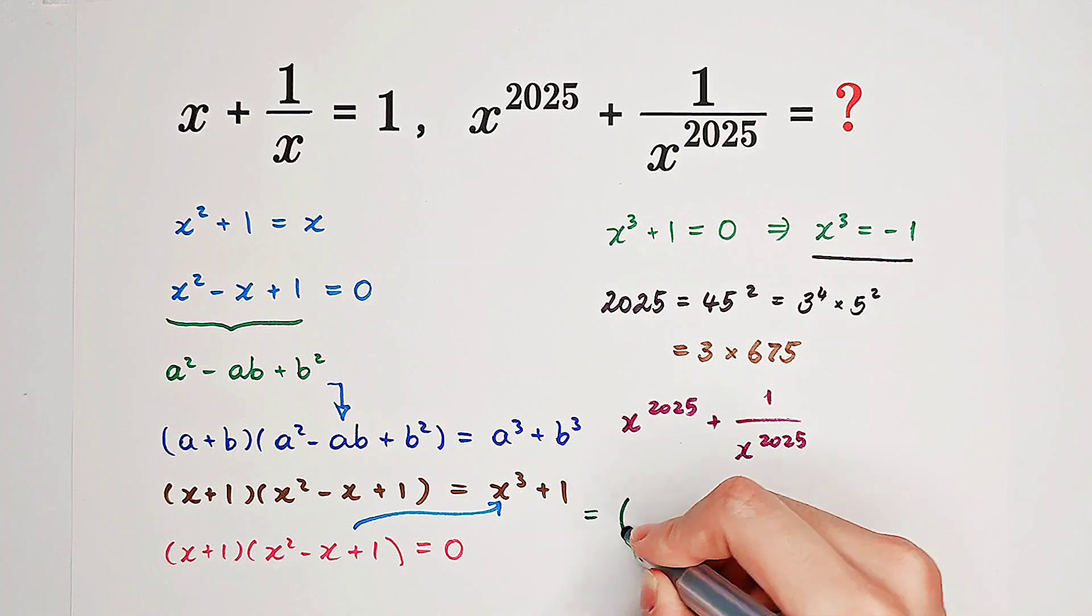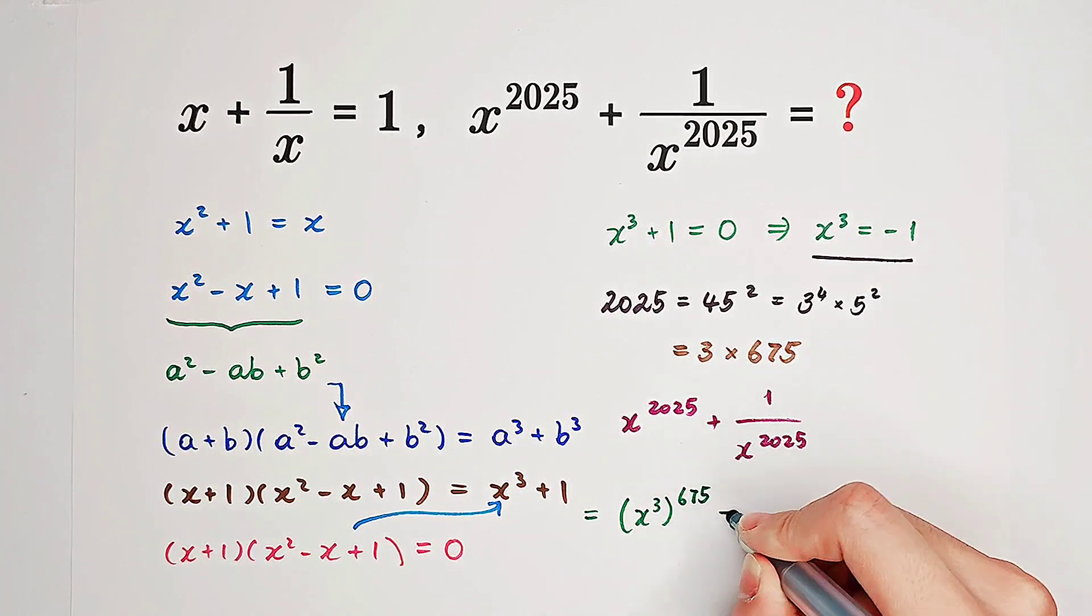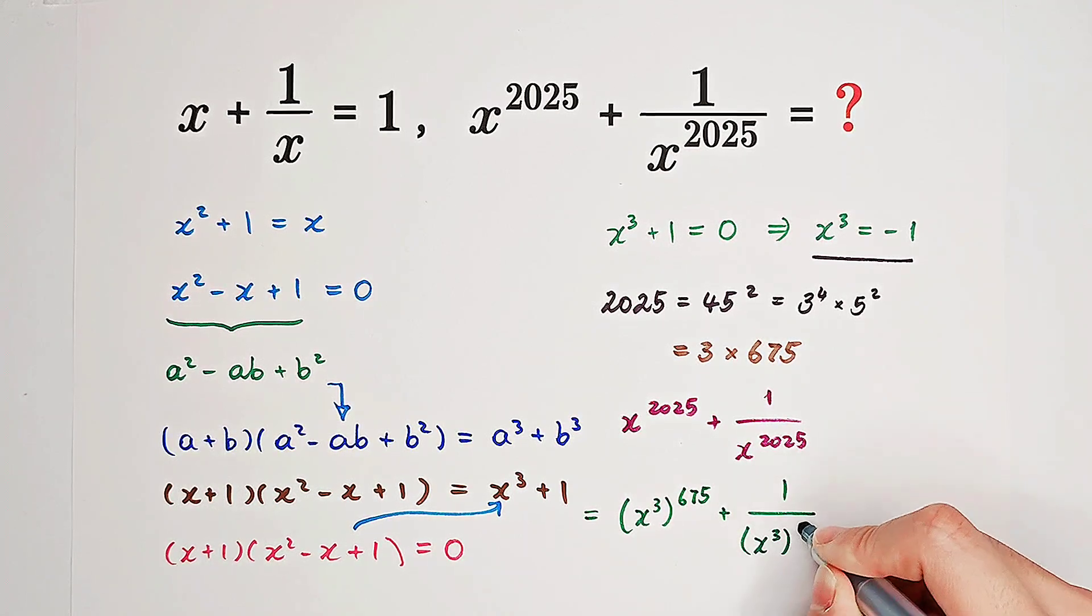It's also simple and easy. It is x cubed all to the power of 675 plus 1 over x cubed all to the power of 675.